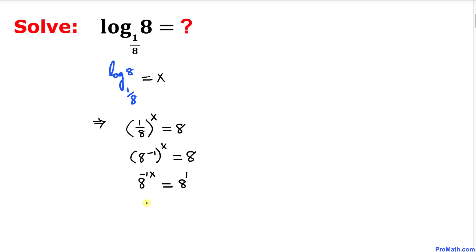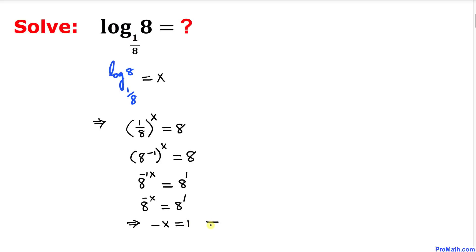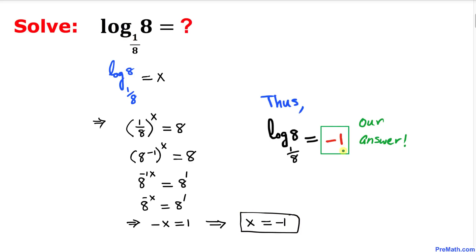So we have 8 power negative x equal to 8 power 1. Since the bases on both sides are the same, we can equate the exponents. That gives us negative x equal to 1, or switching the sign, x equals negative 1. Thus our answer turns out to be negative 1.